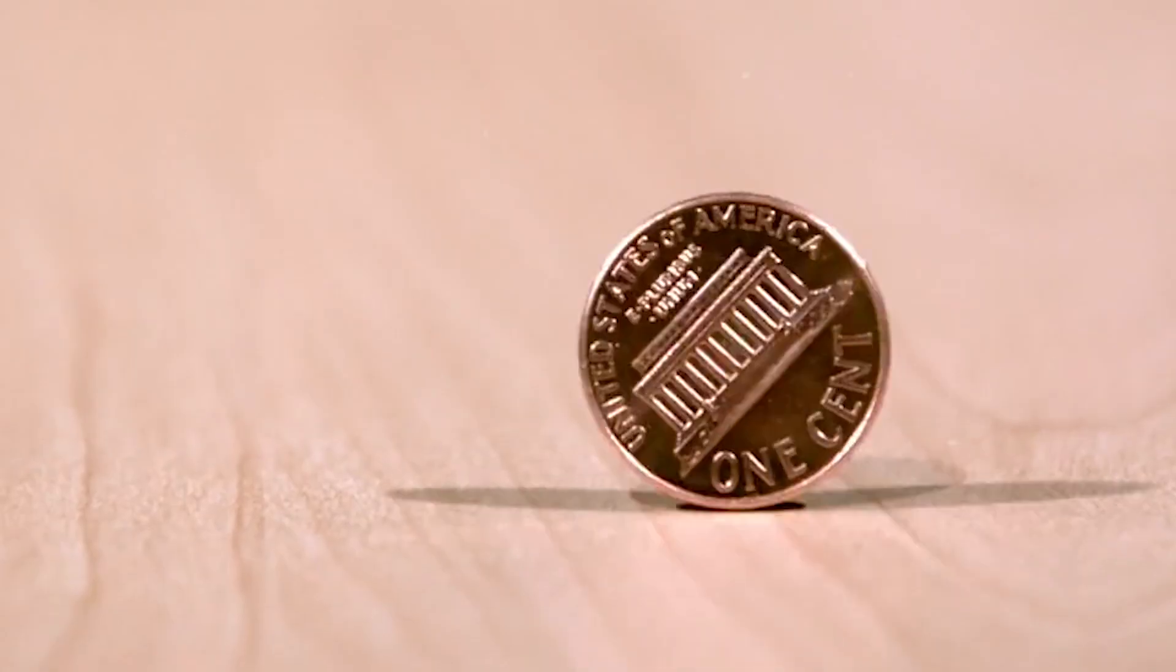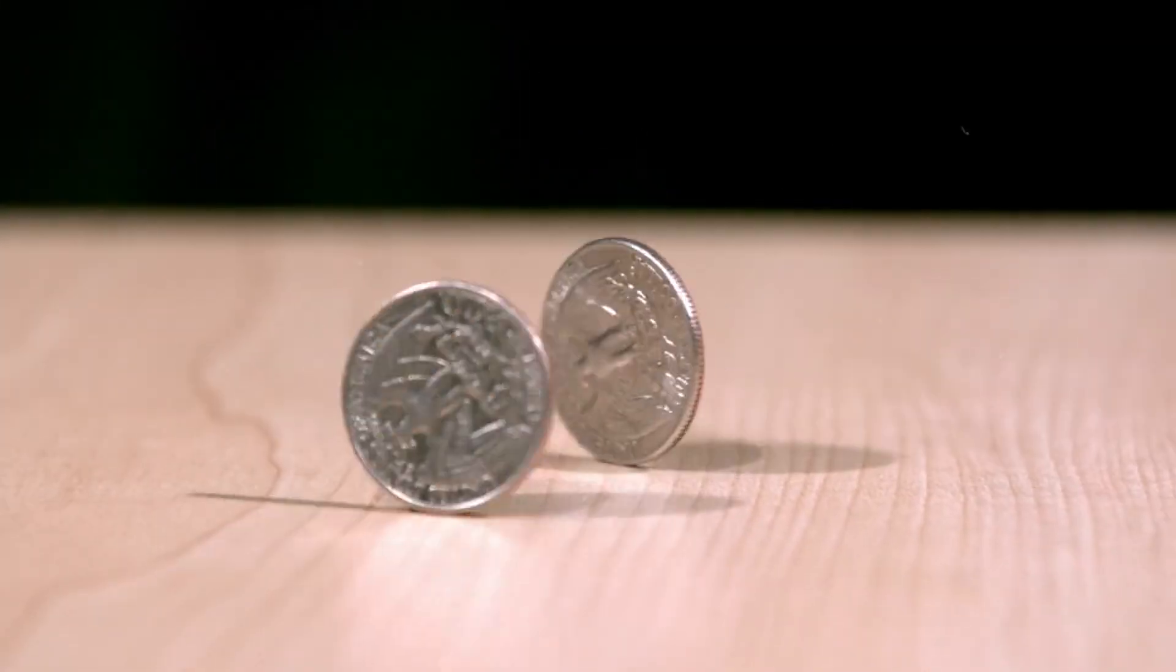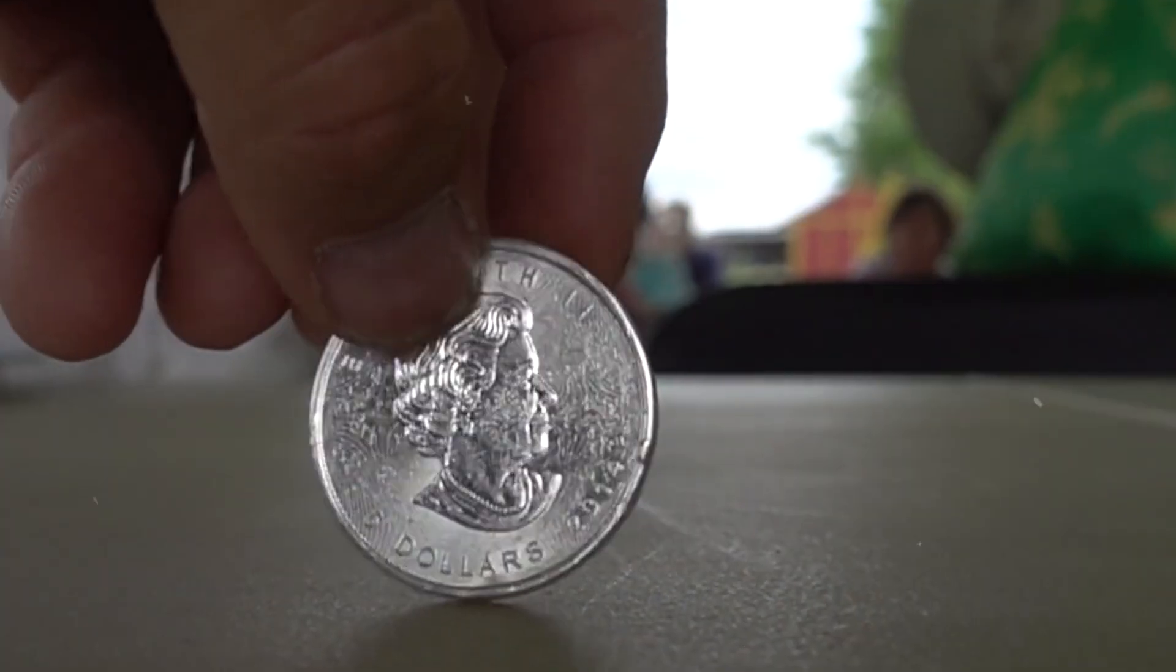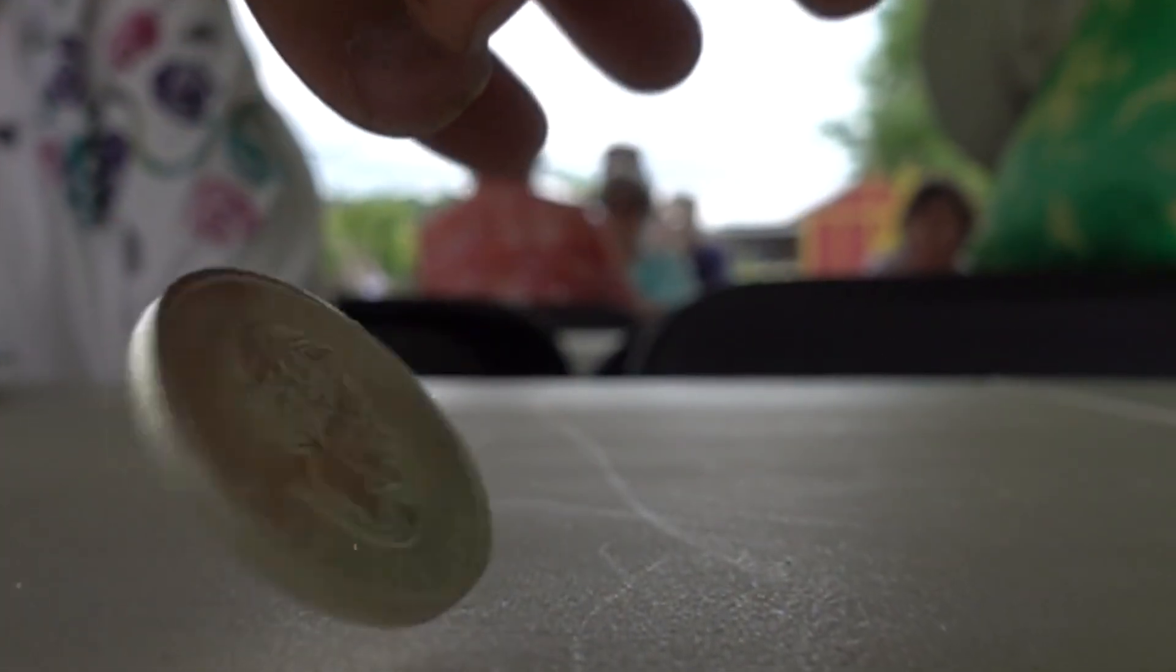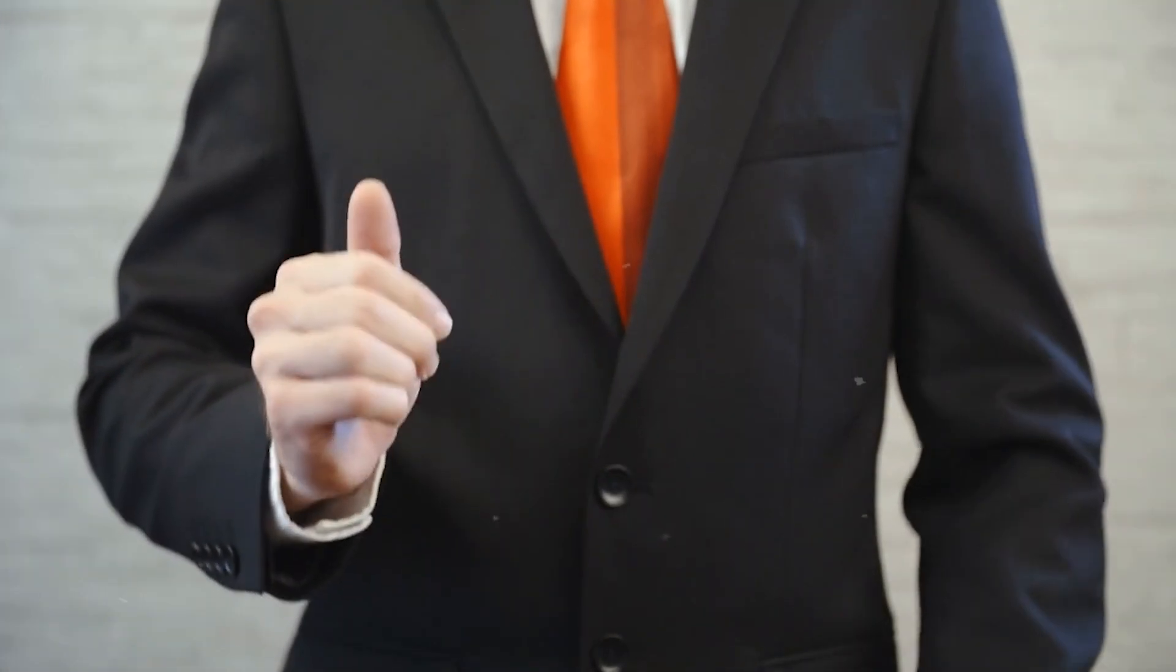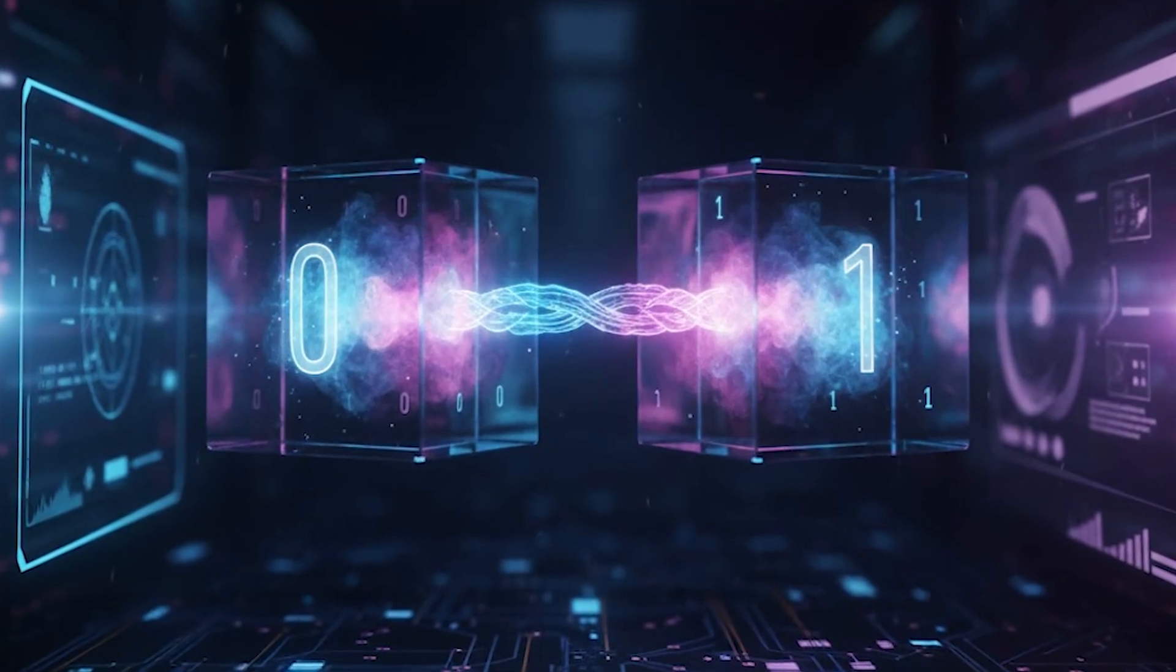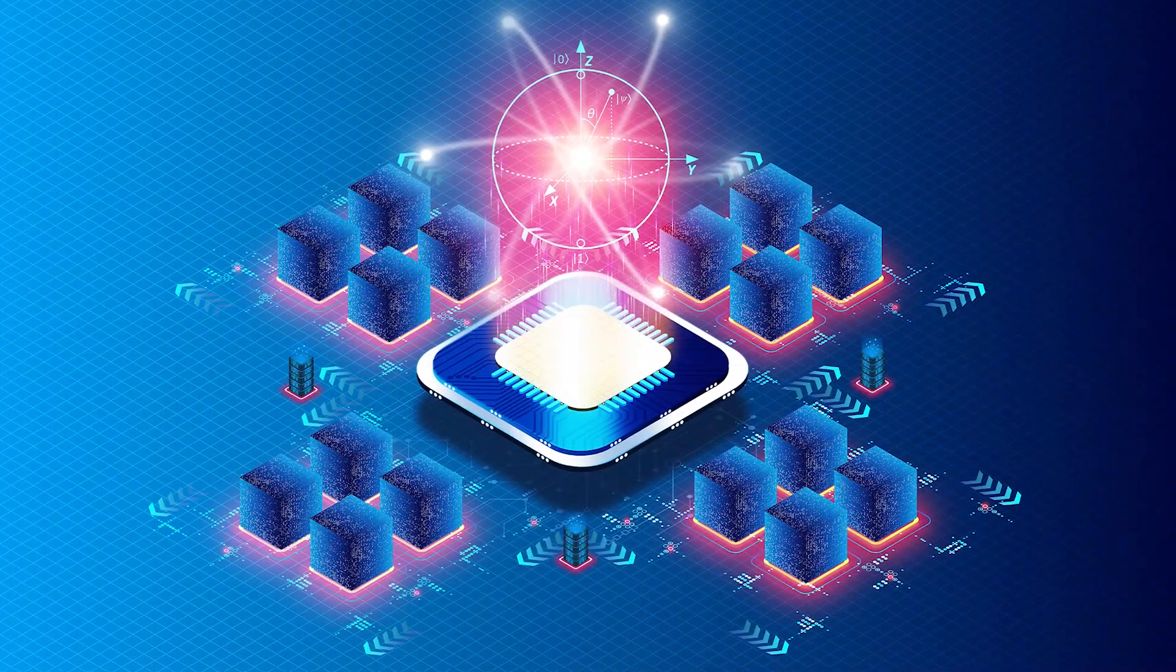The coin analogy makes this clearer. A coin lying flat shows heads or tails, but toss it into the air, and for that fleeting moment, it feels like it's both. You only know the outcome once it lands. Qubits are like coins forever caught in mid-spin, carrying both states at once.